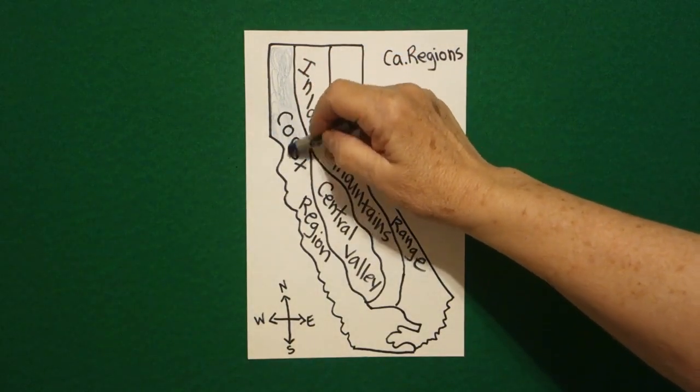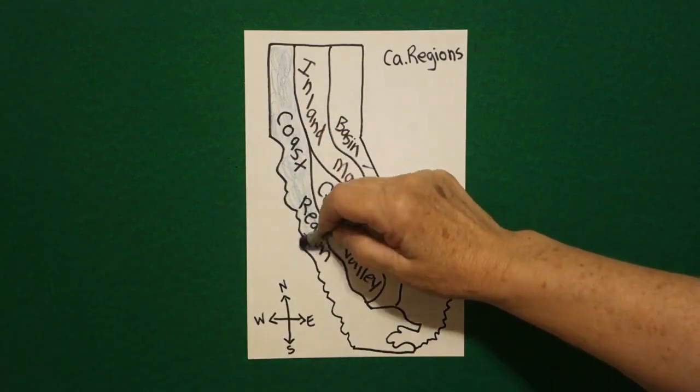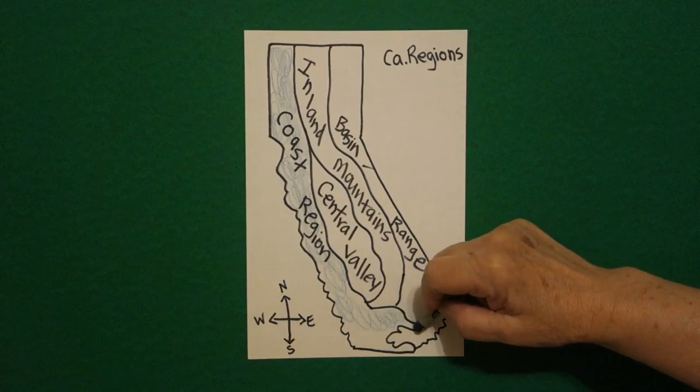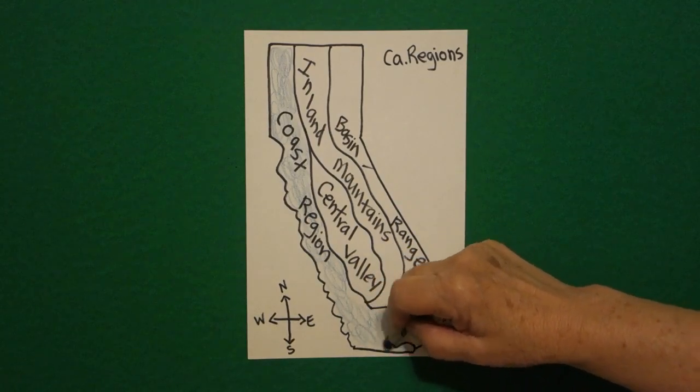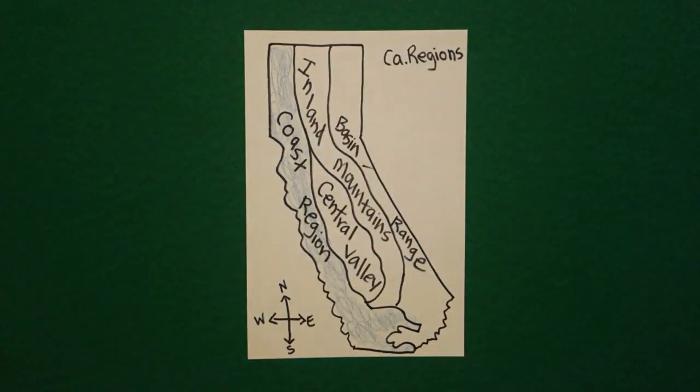So the coast region, I think of the beach. I think of water. I think of the ocean. And California has that all the way from north to south. So I made that lightly colored blue-green.